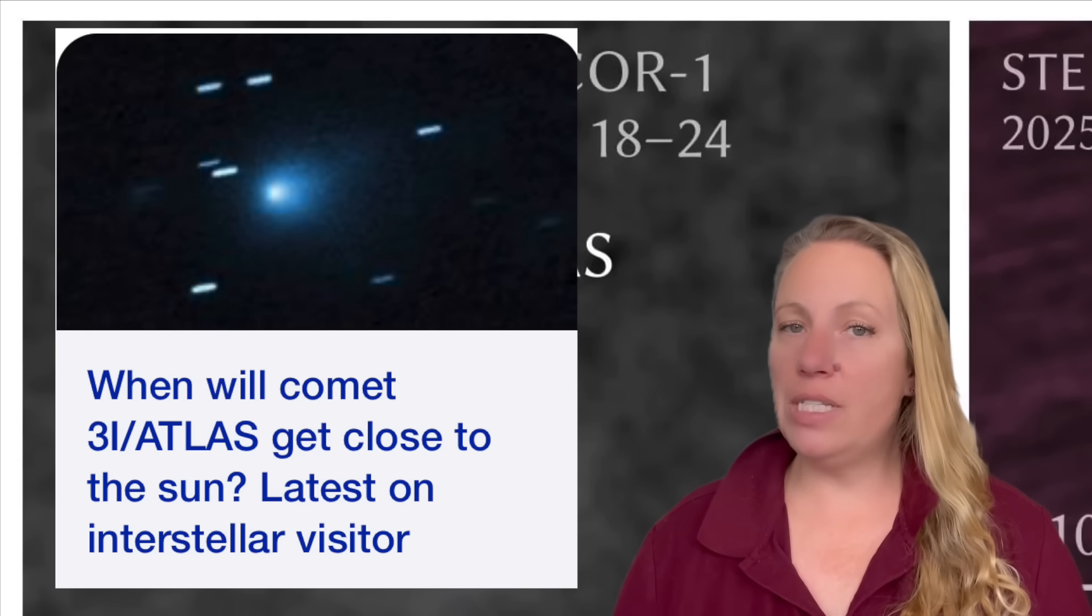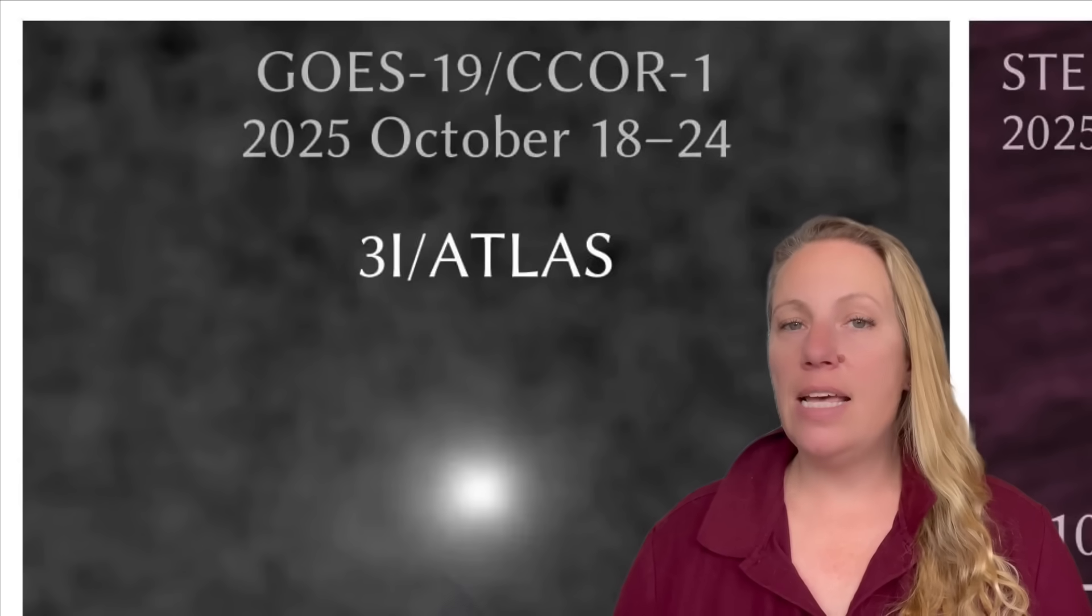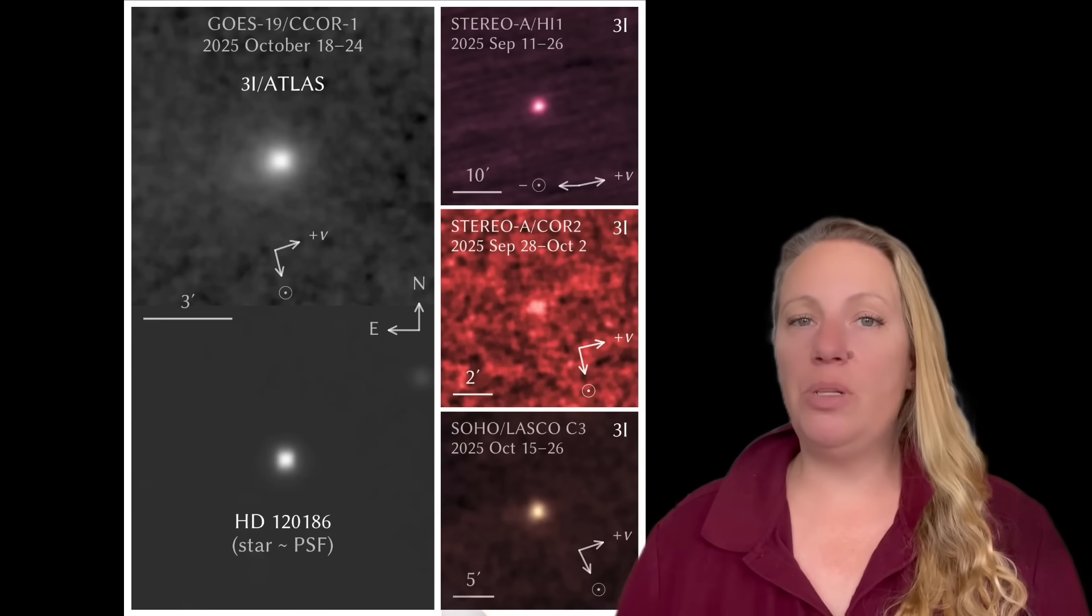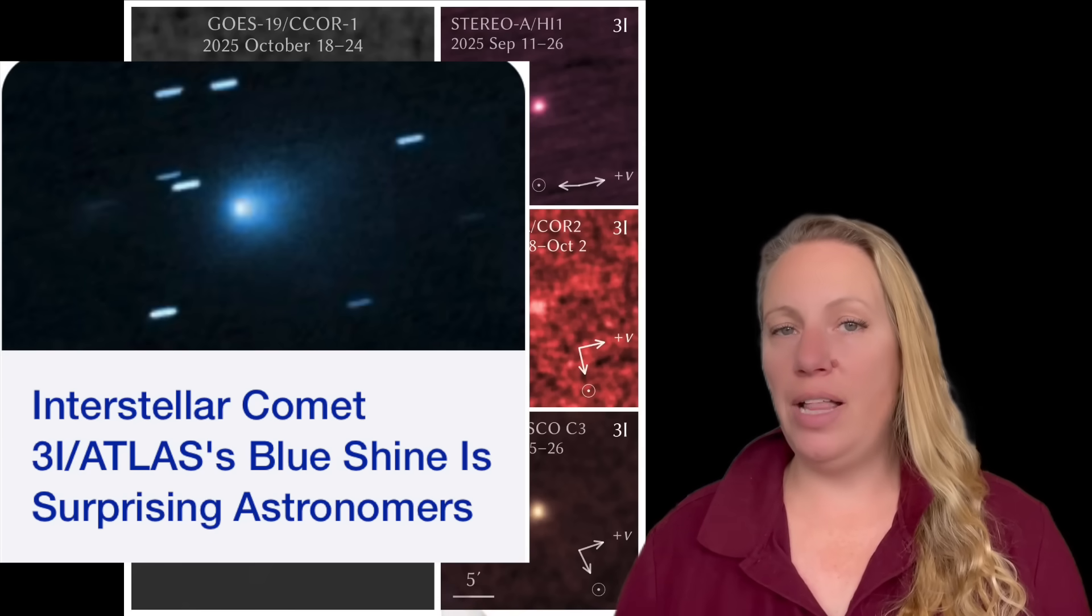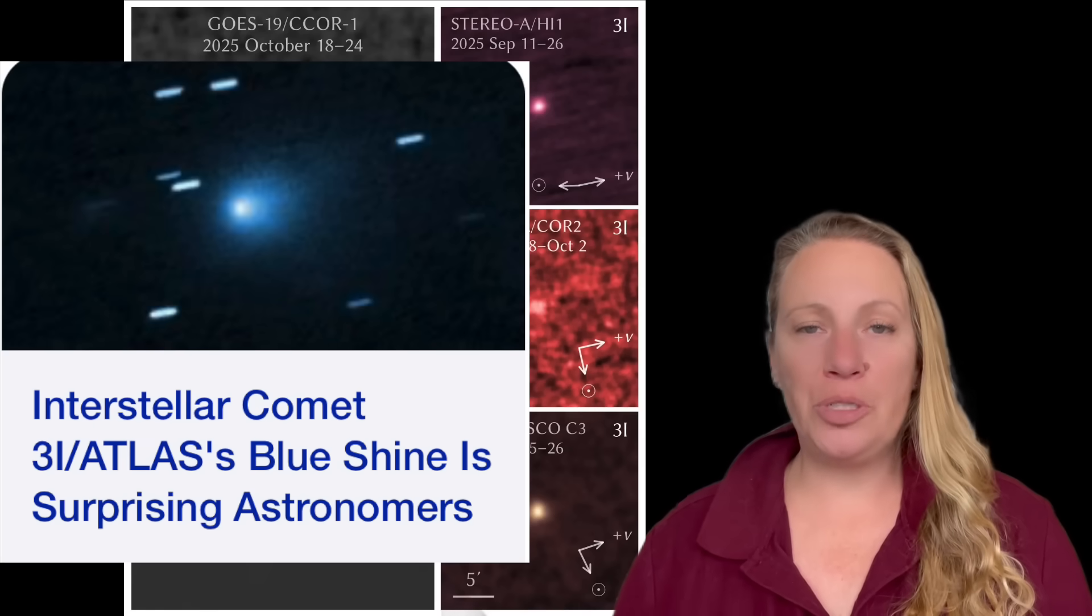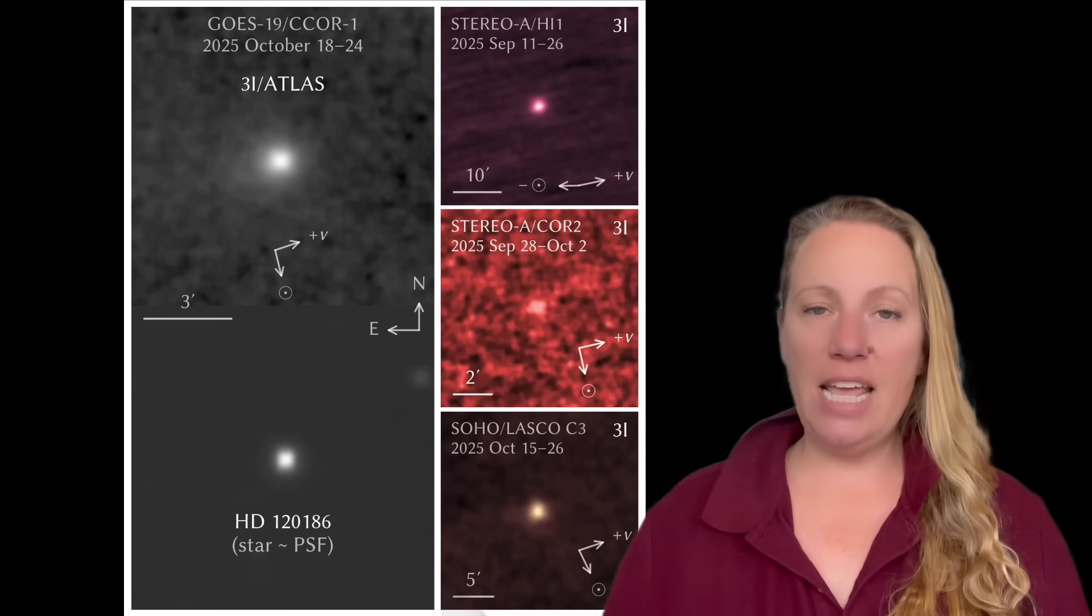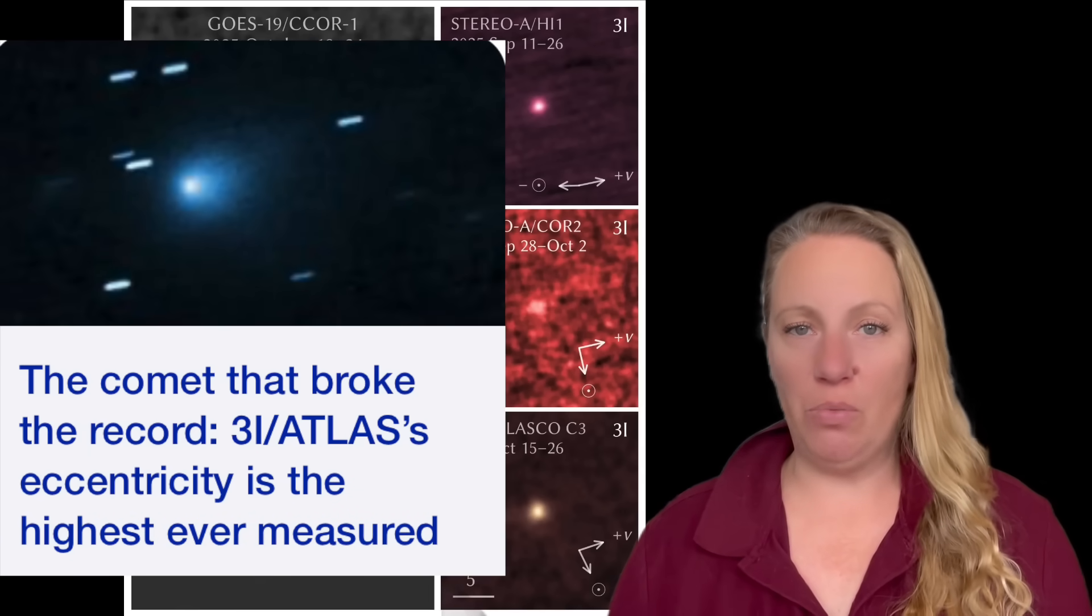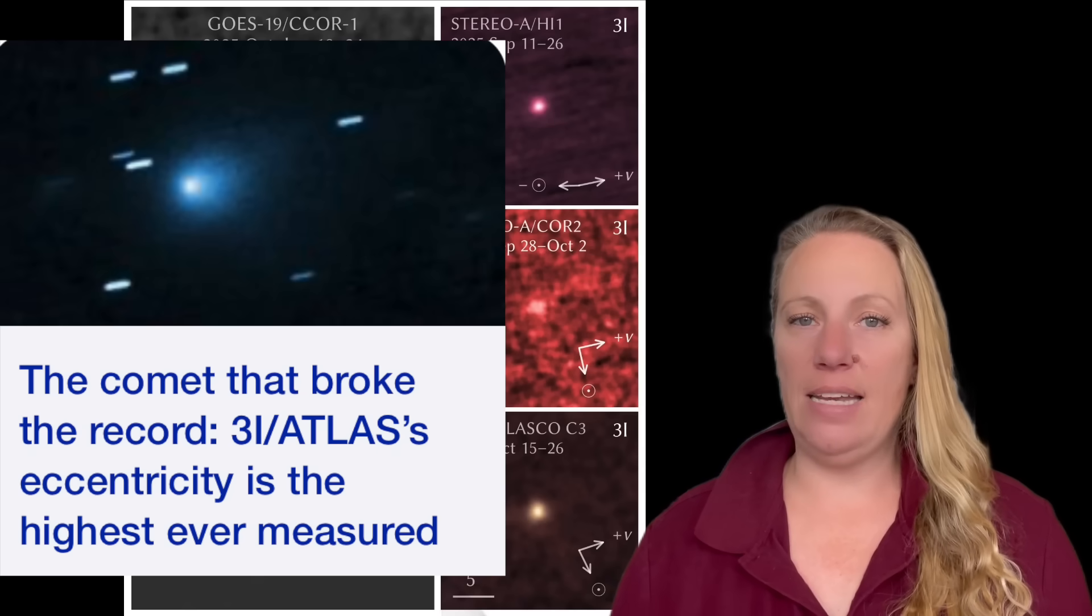Some researchers, Avi Loeb for example, have even published papers suggesting the object might be technological, possibly even hostile. Although this remains speculative and controversial, Avi Loeb says he gives it only a 40% chance that it might be an alien spaceship, but he says if it is, it would have dire implications for the Earth. And that's why we really should get our heads together to really find out what exactly it is.